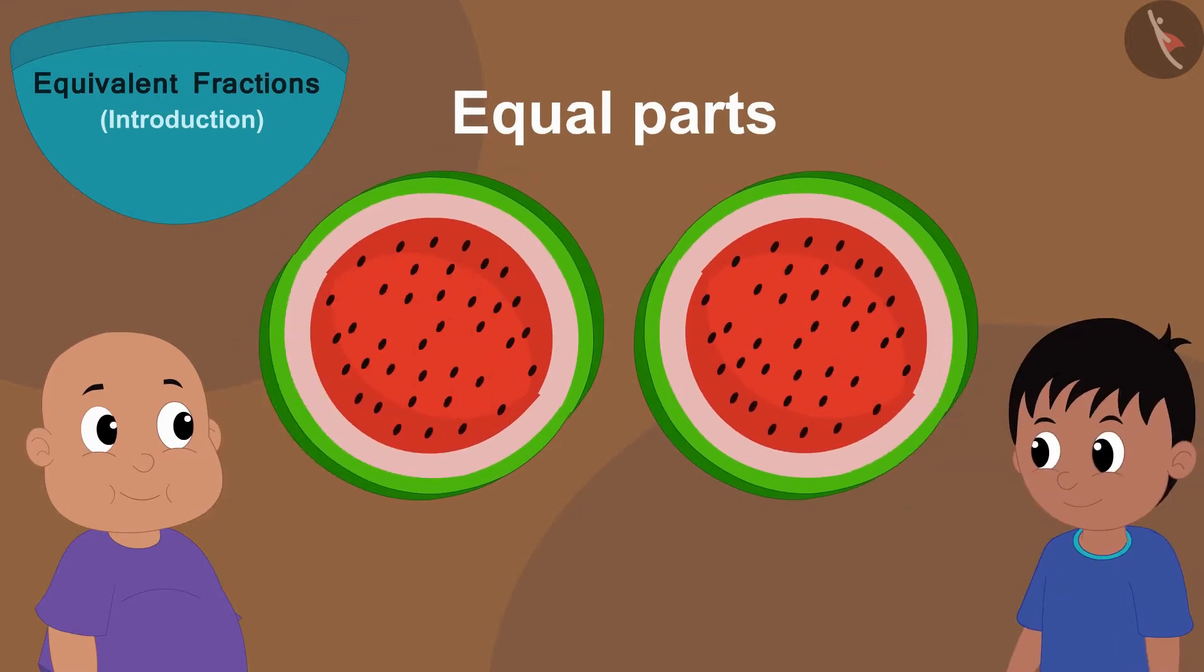There are two equal parts of watermelon here and both Raju and Bablu have taken a part of it. So, we can say that both Raju and Bablu got one by two or half of the watermelon.